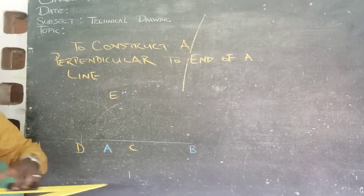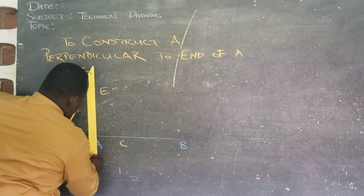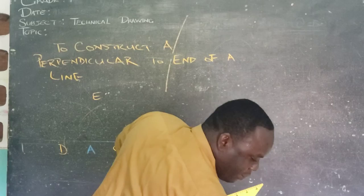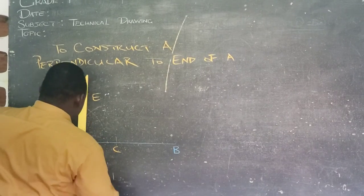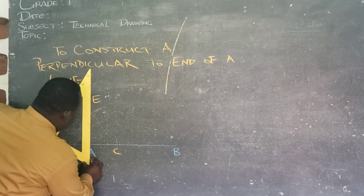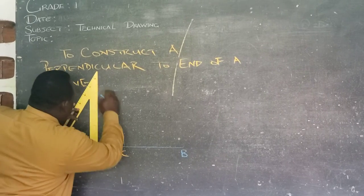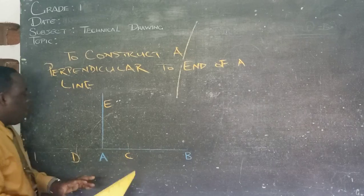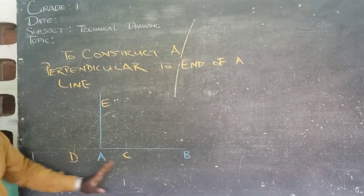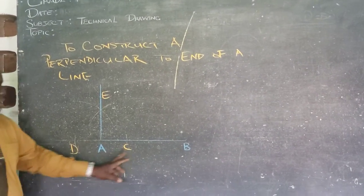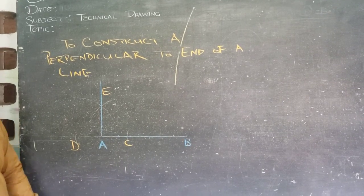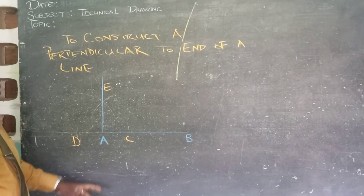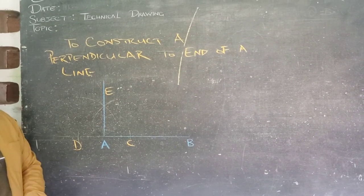So having done that now, I will draw a line. Let me get back my color. I will be using blue. So having done that, I will now draw a line through those two arcs to connect to A. So I would have created or constructed a perpendicular to my line AB, and it would have been at the end of the line at point A. So it is important to go ahead and practice this.